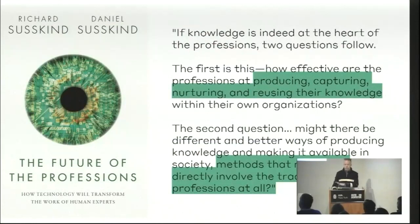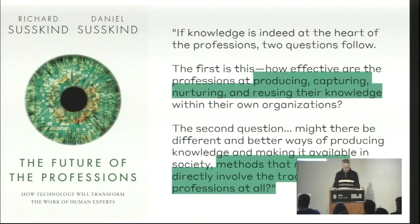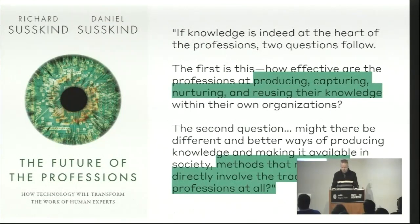With that passage from 60 years ago in mind, let's bring forward to today. Most of you have either read this book, heard Phil Bernstein talk about it, or read Daniel Davis's recent review. The framework of the book can be summarized: if knowledge is at the heart of the professions, two questions follow. First, how effective are the professions at producing, capturing, nurturing, and reusing their knowledge? Second, might there be different and better ways to produce knowledge available in society — methods that might not involve the traditional professions at all? The profession of architecture often fails at the former, especially with capturing, nurturing, and reusing knowledge.